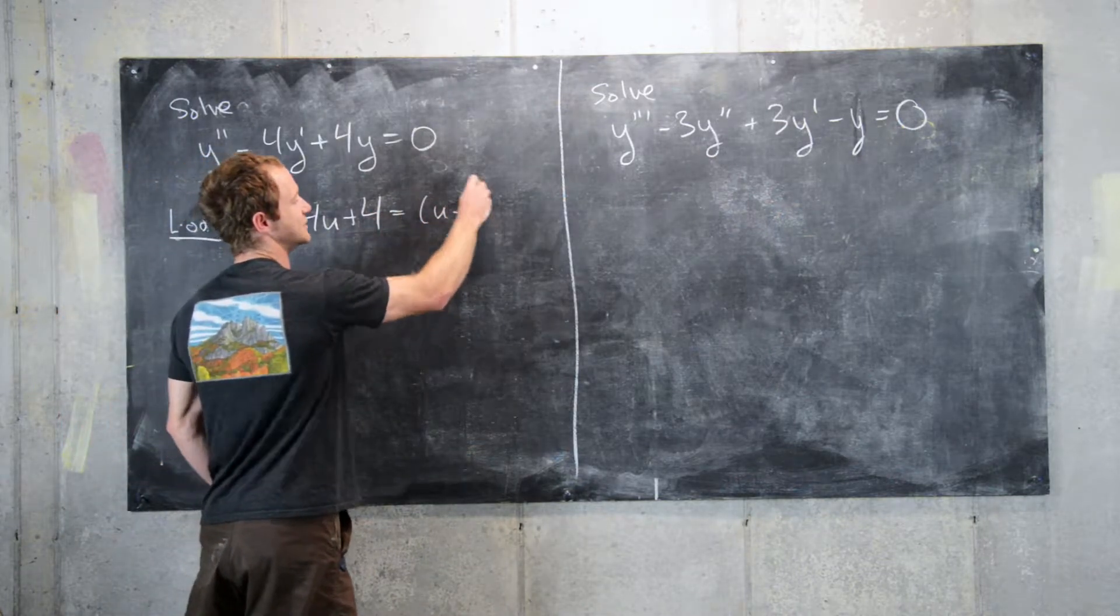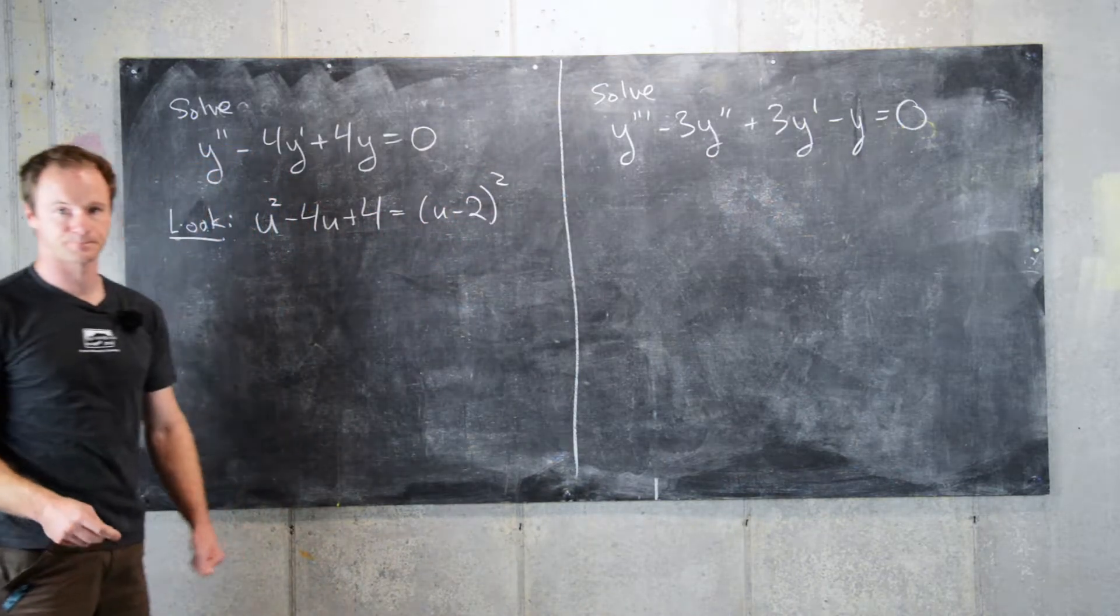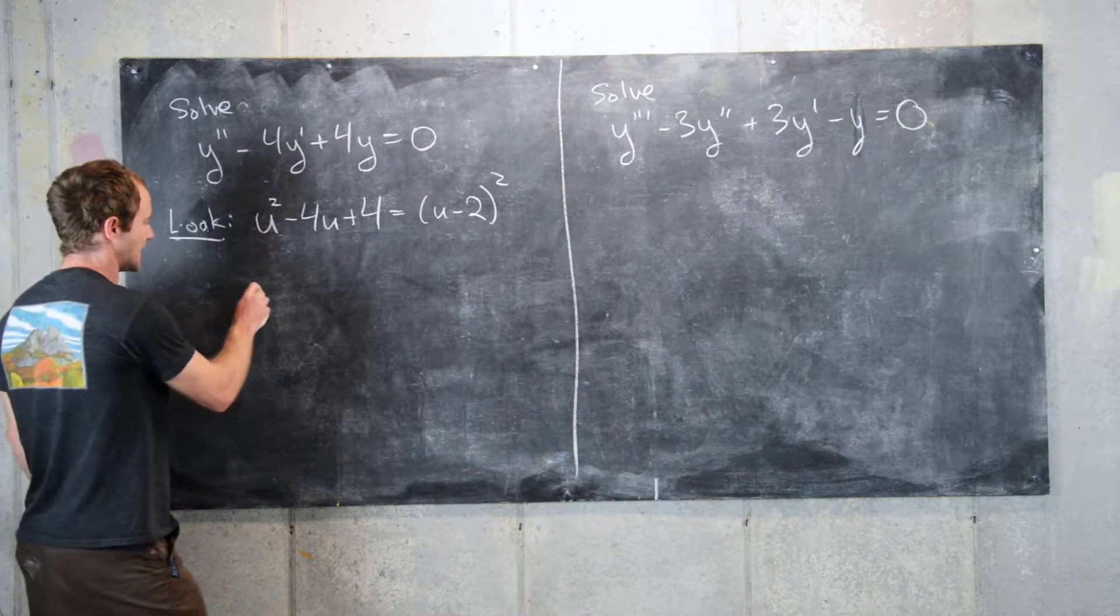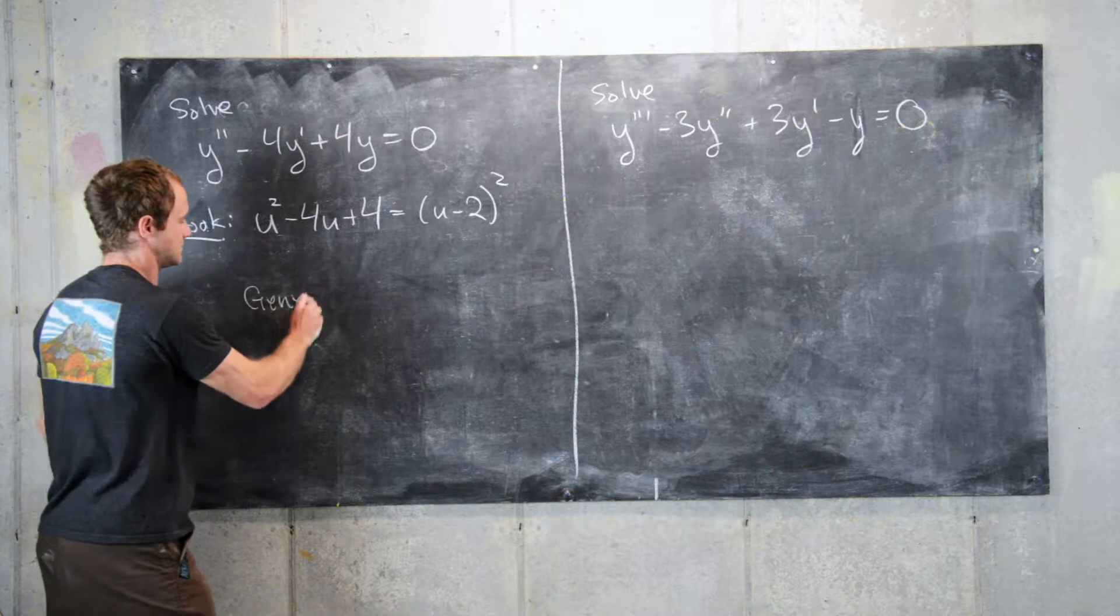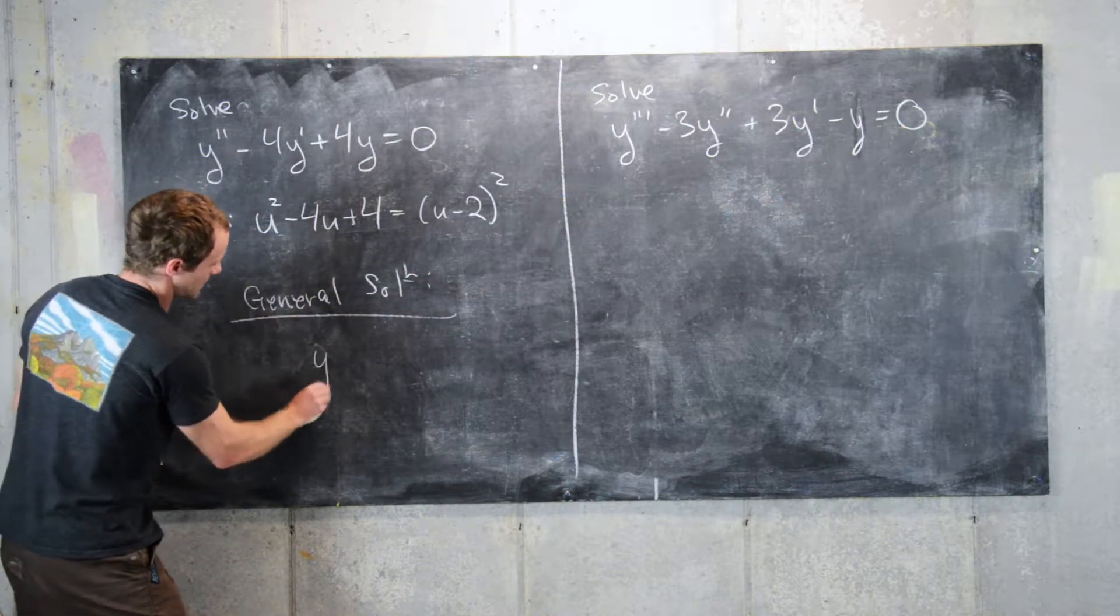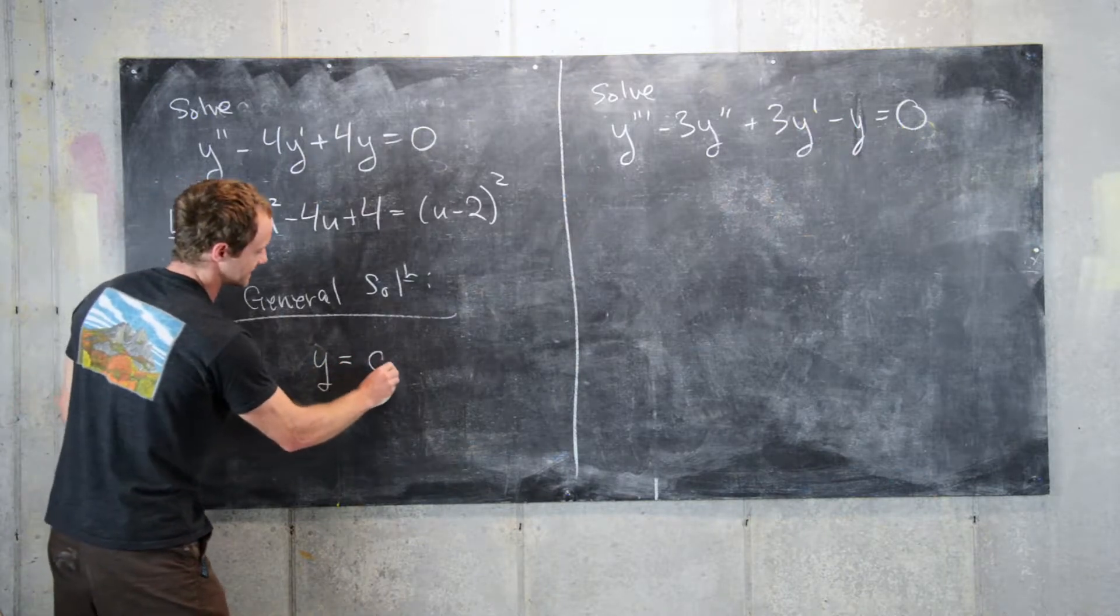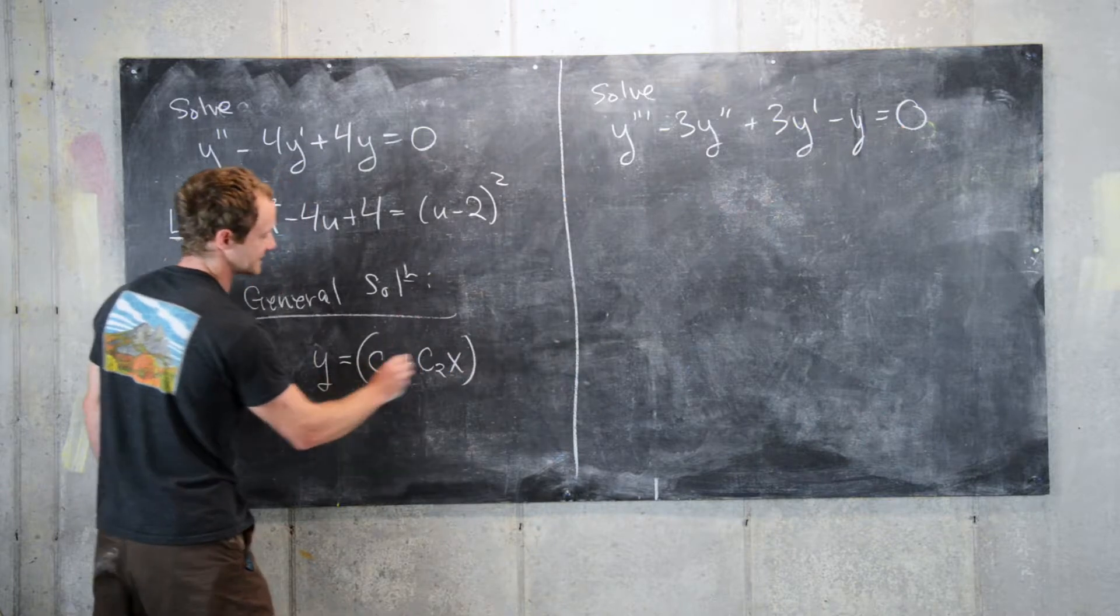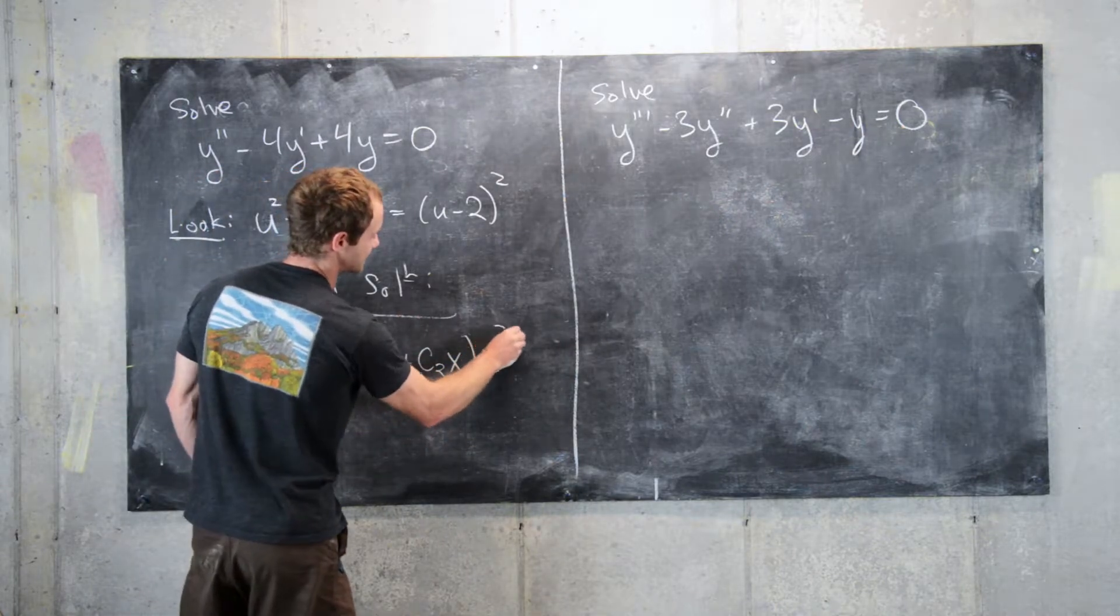So this is u minus 2 squared. And so from previous work, we had a general solution given by y equals c1 plus c2 times x times e to the 2x,